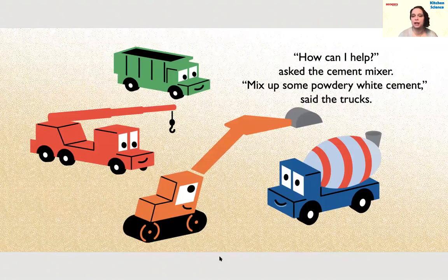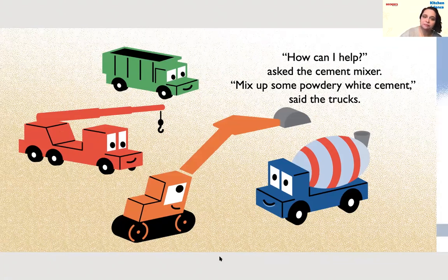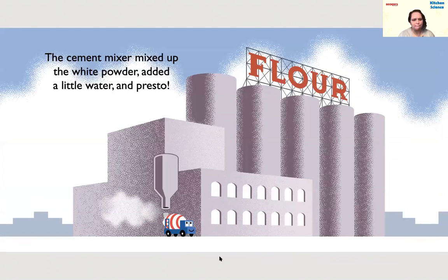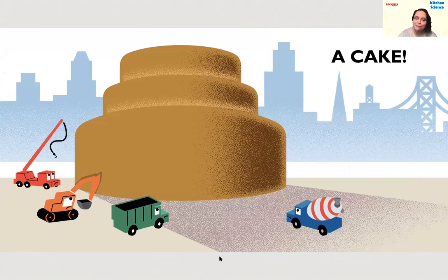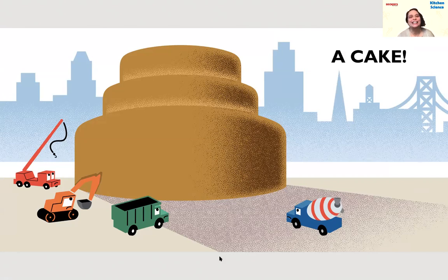'How can I help?' asked the cement mixer. 'Mix up some powdery white cement,' said the trucks. It looks like he's at a building picking up some white powder — but that building has a sign that says 'flour.' So the cement mixer mixed up the white powder, added a little water, and presto — a cake! He added white powder to water just like he was supposed to, but it was the wrong white powder. He used flour instead of cement.